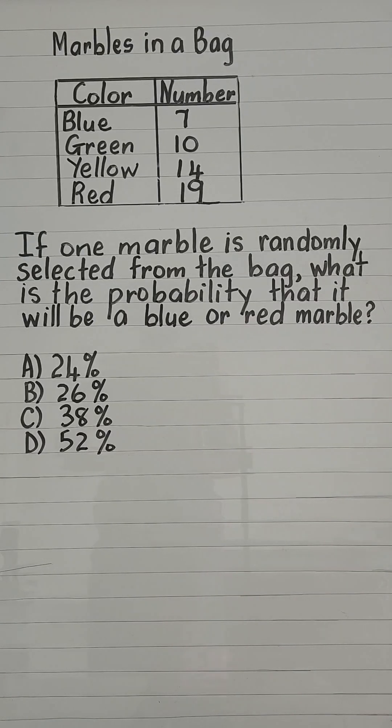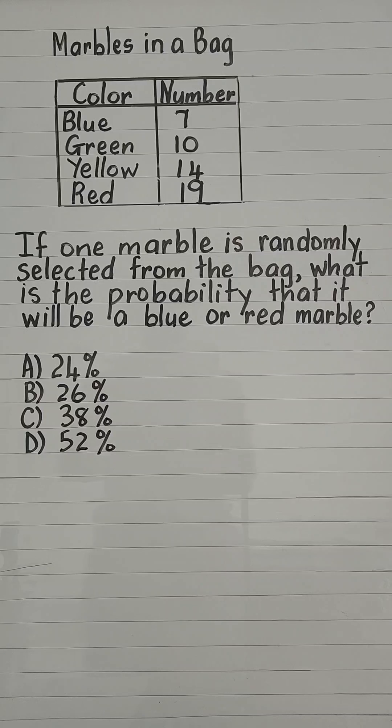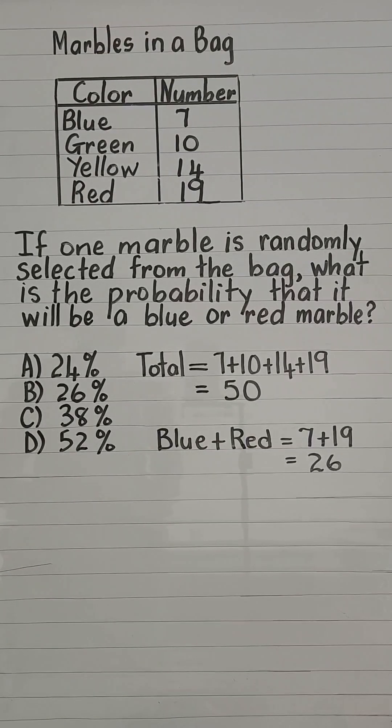finding the total number of marbles in the bag and also the total of blue and red marbles. So total marbles is 50, and the total of blue plus red is 26. So the probability of pulling a